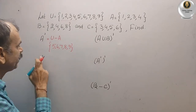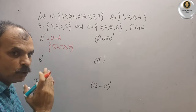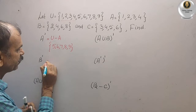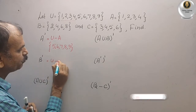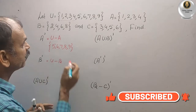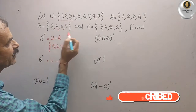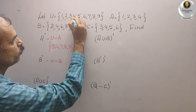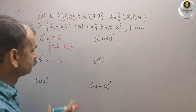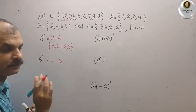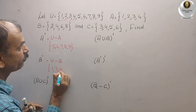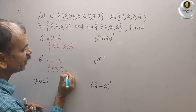Next, B dash. B dash is nothing but universal set minus B. B = {2, 4, 6, 8}, so we remove those from U. The remaining elements give us B dash, which is {1, 3, 5, 7, 9}.